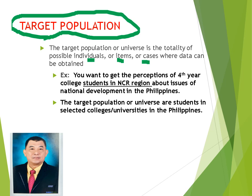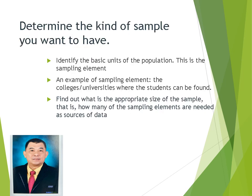When we say college universities, this is either private or public or a combination of both. Determining the kind of sample you want to have, let's understand first the basic units of the population, which is the sampling element. The sampling element in our previous example of fourth year college students in NCR region, the sampling element is the colleges, universities where students can be found. So find out what is the appropriate size of the sample, that is how many of the sampling elements are needed as sources of data. This is your population. You have to determine your population, target population, for you to compute the small letter n or sample size.